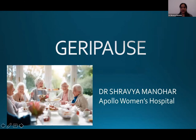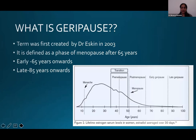My topic for today is Geripause. What is Geripause? It was a term first coined by Dr. Eskin in 2003. It's defined as a phase of menopause after 65 years and it's divided into early and late Geripause. 65 years onwards is early, and late is 80 years onwards.